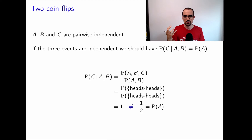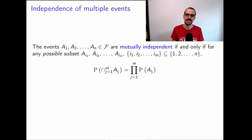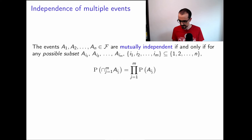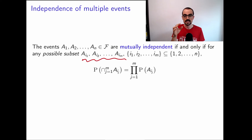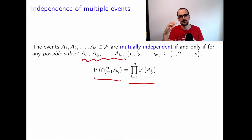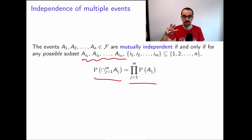Because of this, we need a stronger definition called mutual independence. For n events to be mutually independent, for any subset of m events chosen from those n, the probability of their intersection must equal the product of their individual probabilities. This must hold for any possible choice of m events, for any m ≤ n.